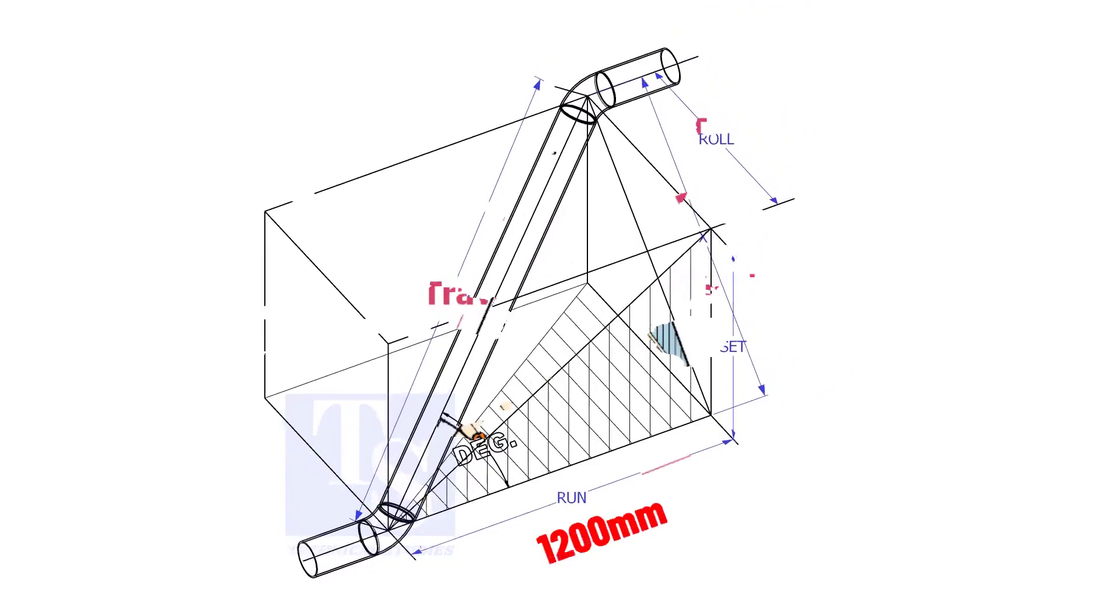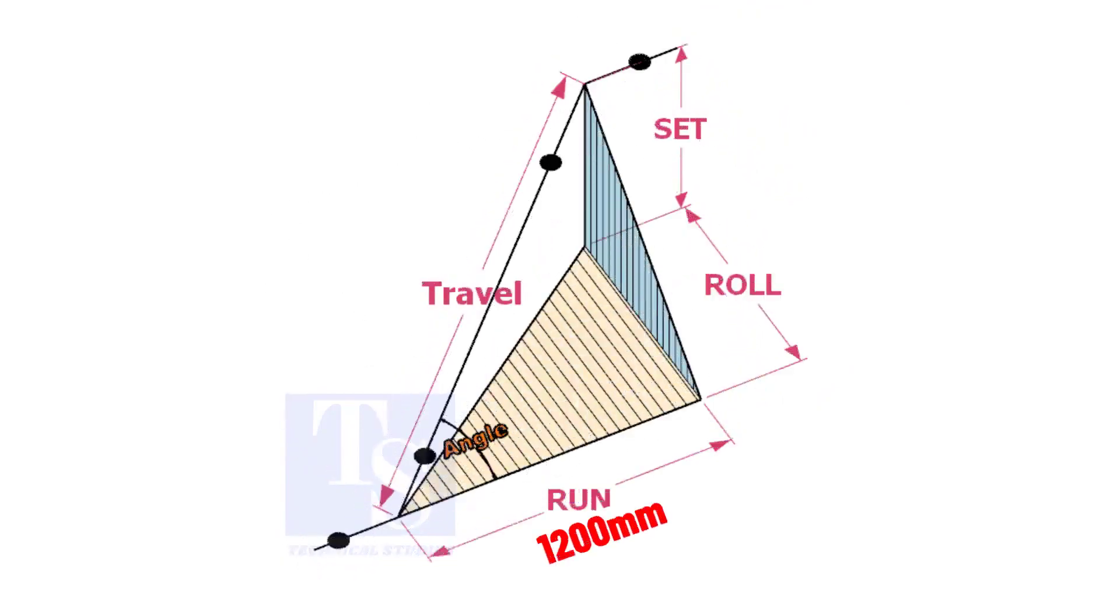Assume that the run is 1200 mm, set is 1000 mm, and the roll is 800 mm.